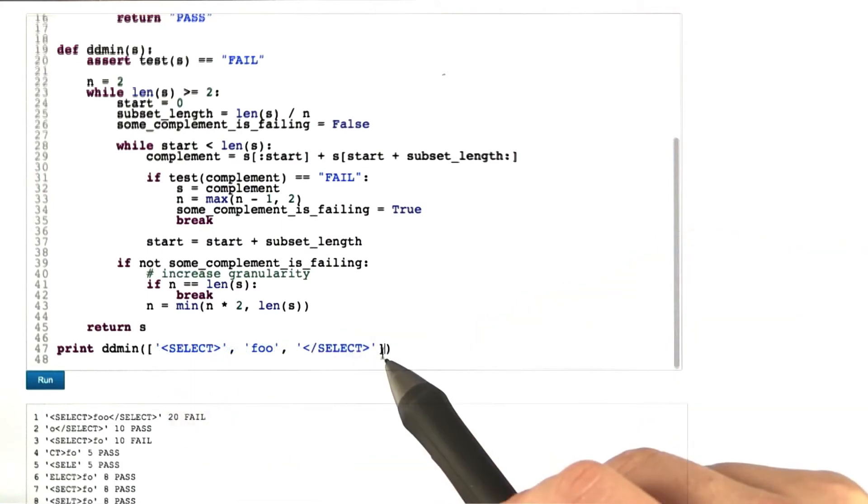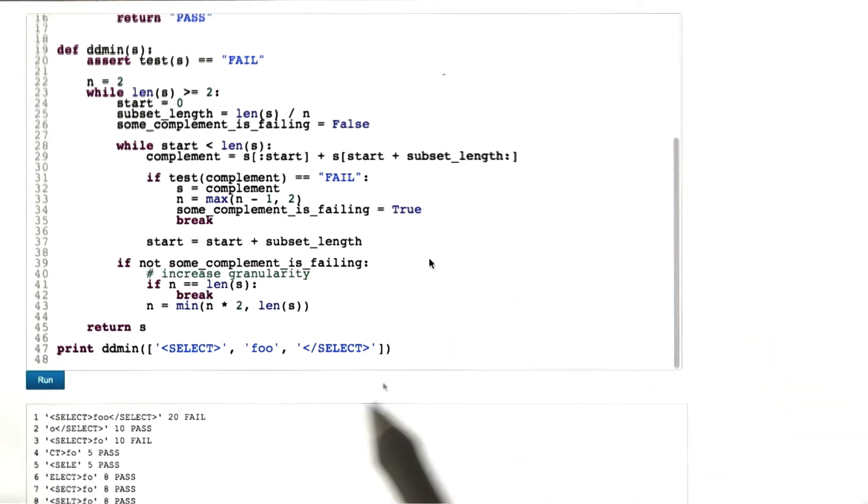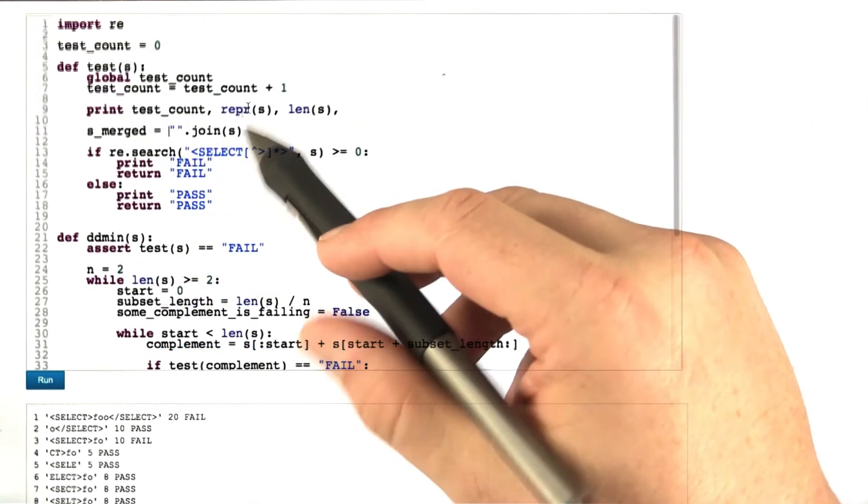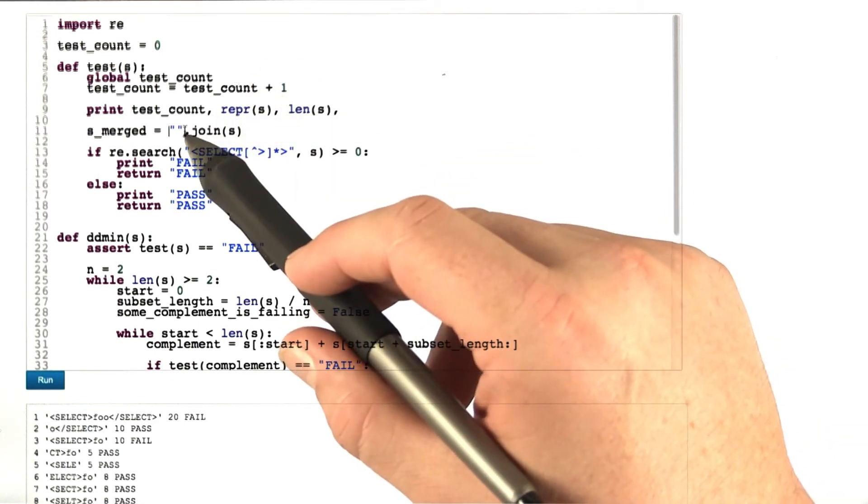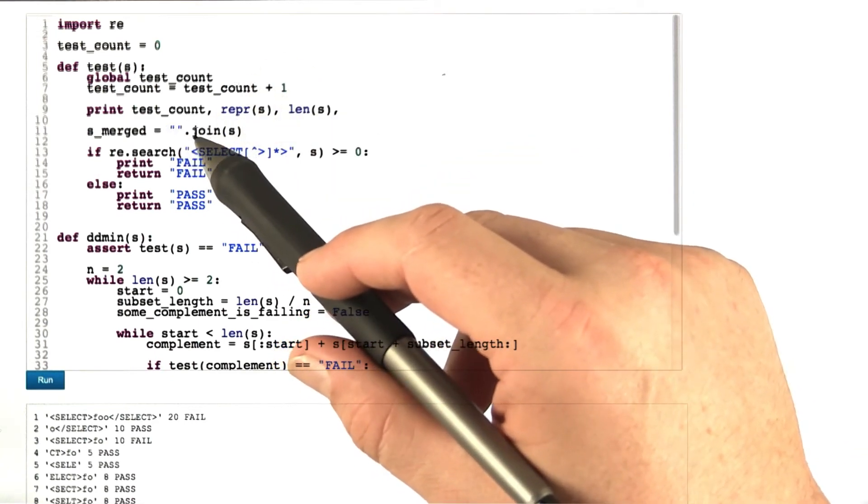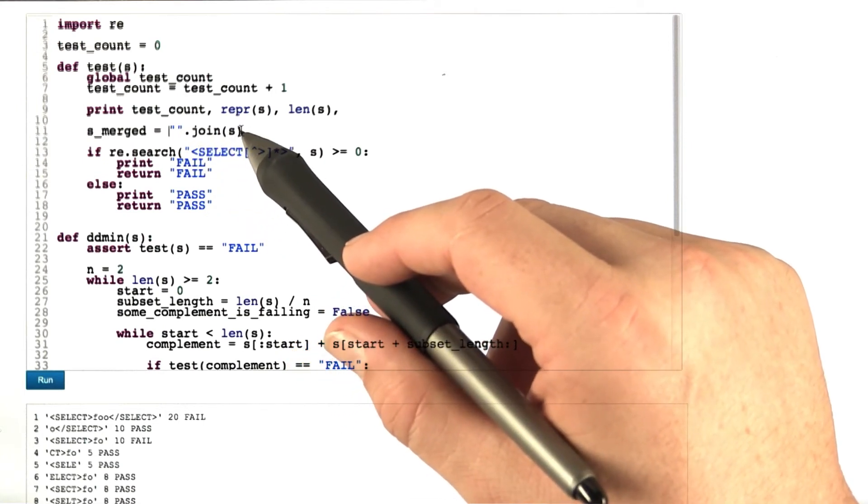This is such a list of elements. First we have the select tag, then foo, and then the end of select. Now what we have to do is, we have to adjust our test function, such that it will merge the individual parts of the list back again into a string, which we do up here. We're using the Python join function, which takes all the elements in a list, and concatenates them with the first string as separator, in our case an empty string.